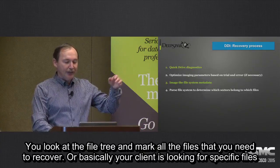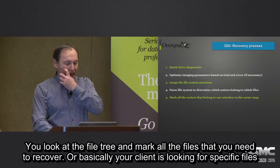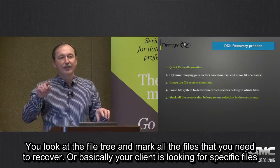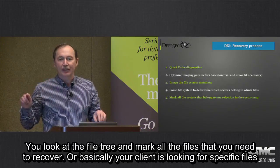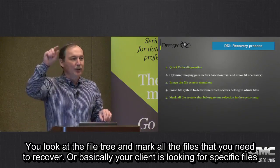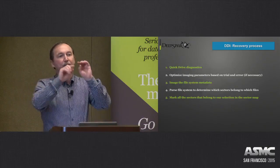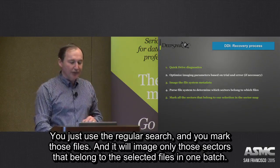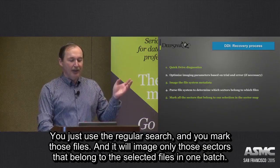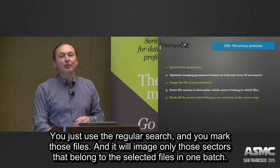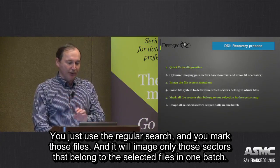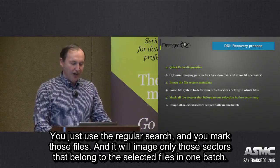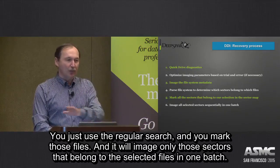You review the file tree and mark all files that you need to recover. Basically your client is looking for specific files — you just use a regular search, it will mark those files, and it will image only those sectors that belong to the selected files in one batch.